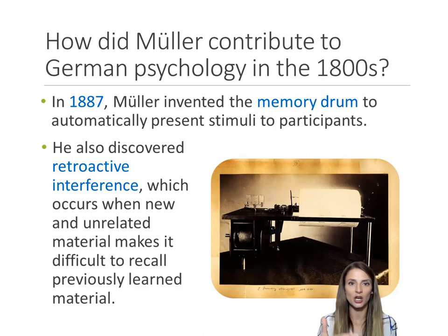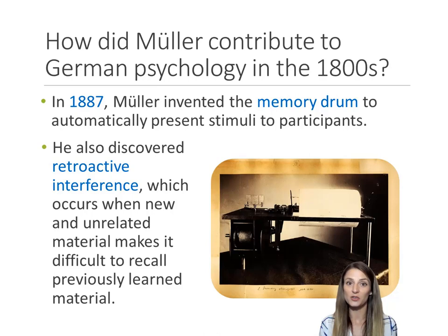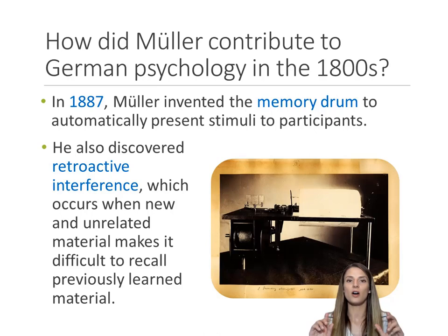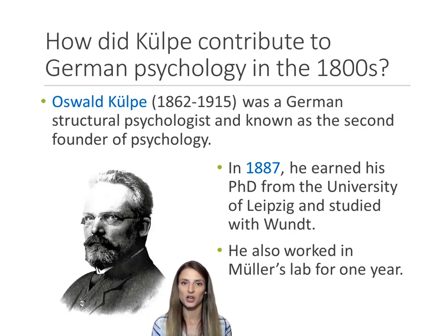He also discovered a concept known as retroactive interference. This occurs when new information that we learn interferes with our ability to recall other information. You might experience retroactive interference during finals week when you're studying for two or three or four different tests. If you have two tests on the same day, the information you learn for the second exam can make it difficult to recall information for the first exam.